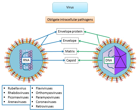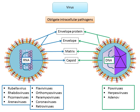Examples of DNA viruses and the diseases they cause include pox viruses which cause smallpox; herpes viruses which cause chickenpox, shingles, oral and genital herpes; adenoviruses which cause conjunctivitis and sore throat; hepadnaviruses which cause hepatitis B; and papillomaviruses which cause warts.